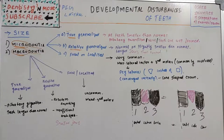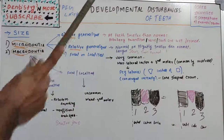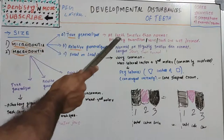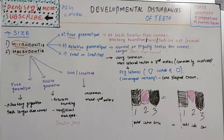The first subtype is true generalized microdontia, where the teeth are actually smaller than normal. This is commonly seen in pituitary dwarfism and is very rare. The teeth are well-formed but smaller than normal.